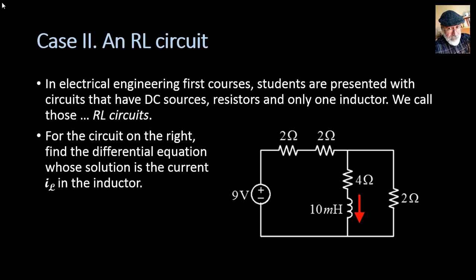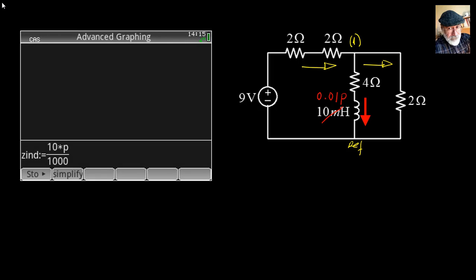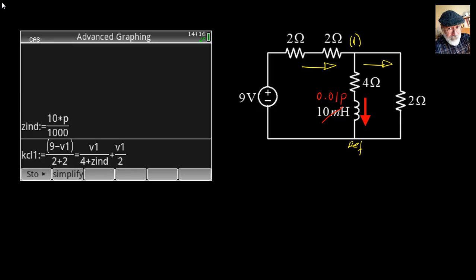Taking the circuit to the next slide, the first step is to replace the reactive elements by their p-impedance. For an inductor: Lp — 10 millihenries times p, which is 0.01p. Choose a reference, identify all other nodes, select current directions for your KCL equation. The impedance of the inductor Z_L is 10p/1000.